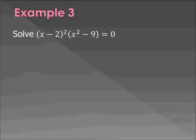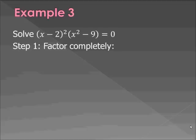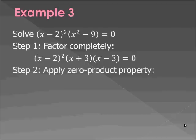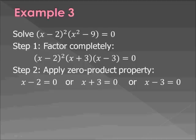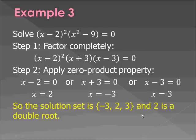Example 3: (x − 2)² times (x² − 9) equals 0. Everything is already on one side. First, factor completely — x² − 9 is not fully factored; it's a difference of squares, so factor it as (x + 3)(x − 3). Now apply the zero product property: x − 2 equals 0, or x + 3 equals 0, or x − 3 equals 0. So x equals 2, −3, or 3. Solution set: {−3, 2, 3}, with 2 being a double root because of (x − 2)².